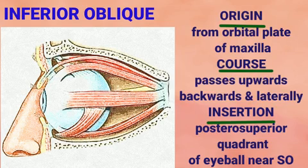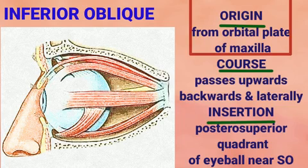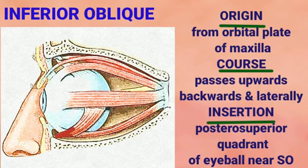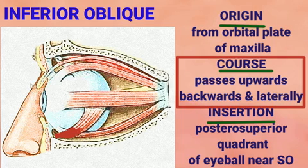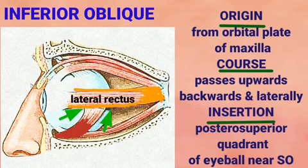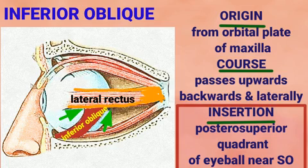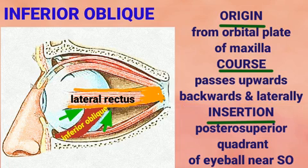The inferior oblique muscle originates as a rounded tendon from the orbital plate of the maxilla. It is the only muscle that originates from the front of the orbit, while all other muscles take origin from the posterior part. At its origin it lies below the inferior rectus, then turns upward, backward, and laterally, passing under cover of the lateral rectus to insert into the sclera behind the equator in the posterior superior quadrant. At its insertion it is close to the superior oblique muscle.